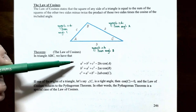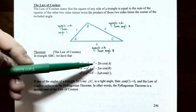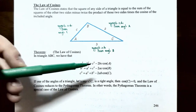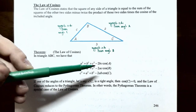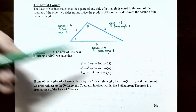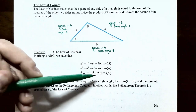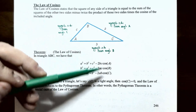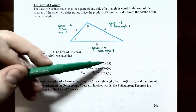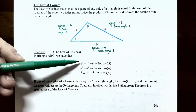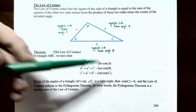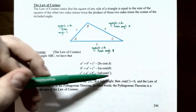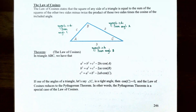Notice that you have the square of one side equal to the sum of the squares of the other two sides, and then you subtract two times the product of those two sides — b and c, or 2a and c, or 2a and b — multiplied by the cosine of the included angle. The cosine corresponds to the angle whose squared side is isolated on the left side of the equation.